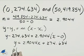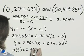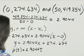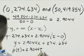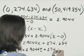And finally, let's call y, p(t), equals 2.9044 times t, because t is our values for 0 and 50, plus 274.634.